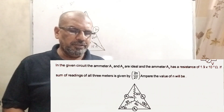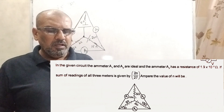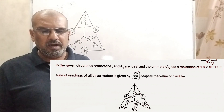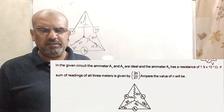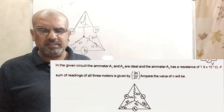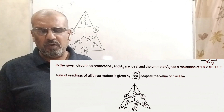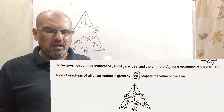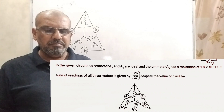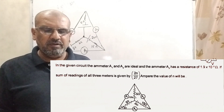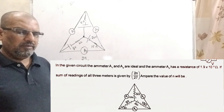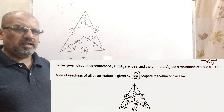Now here is the question. In the given circuit, the ammeters A1 and A2 are ideal, and the ammeter A3 has a resistance of 1.9 × 10⁻³ ohm. If the sum of readings of all three meters is given by 2n/27 ampere, find the value of n.